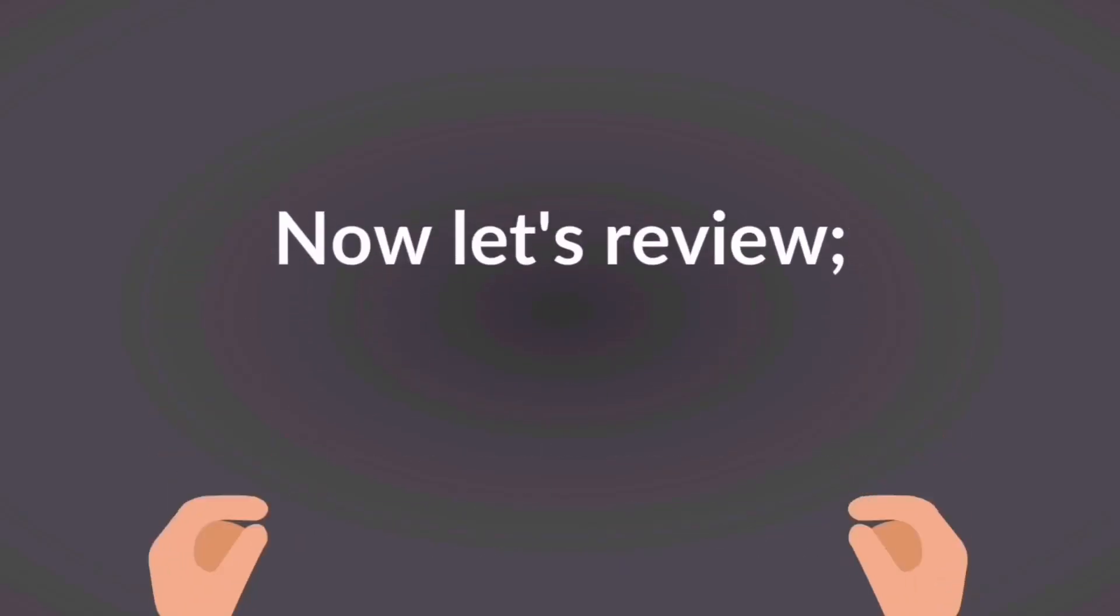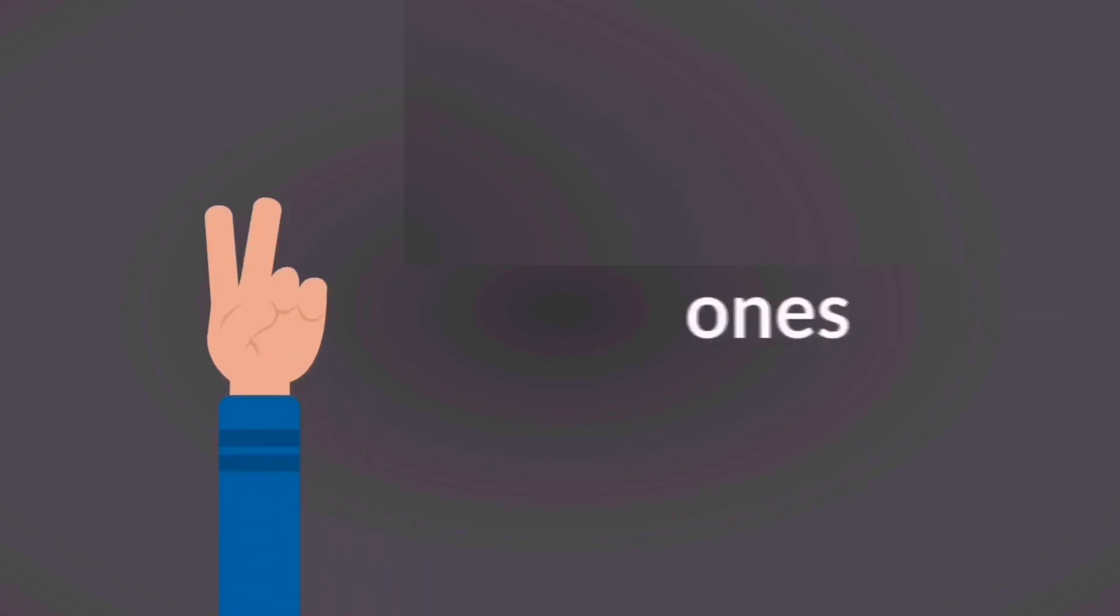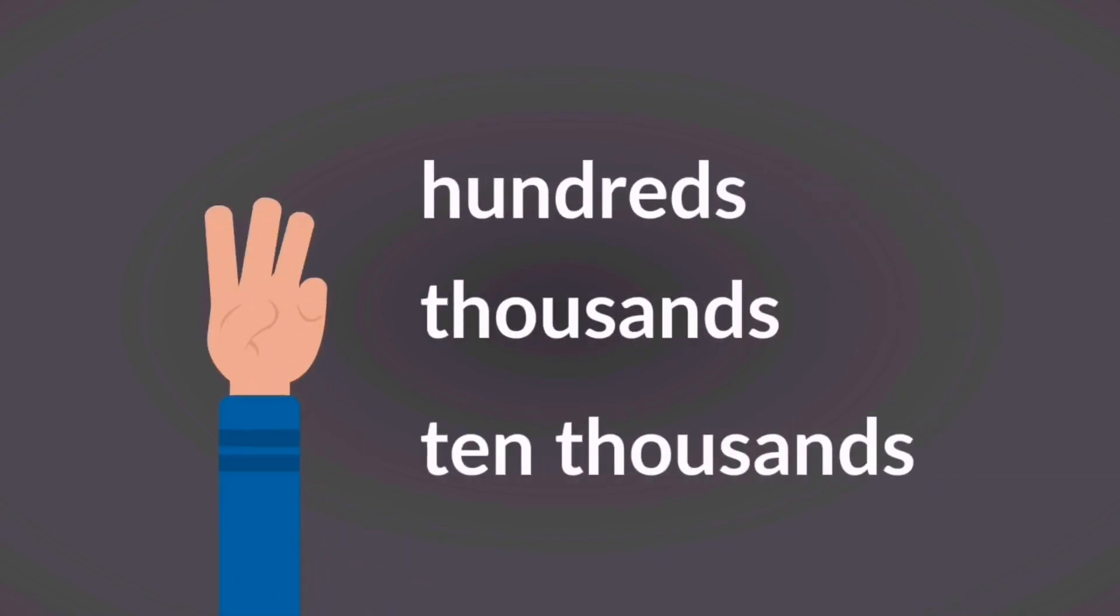Now let's review. The place values of numbers are ones, tens, hundreds, thousands, and ten thousands.